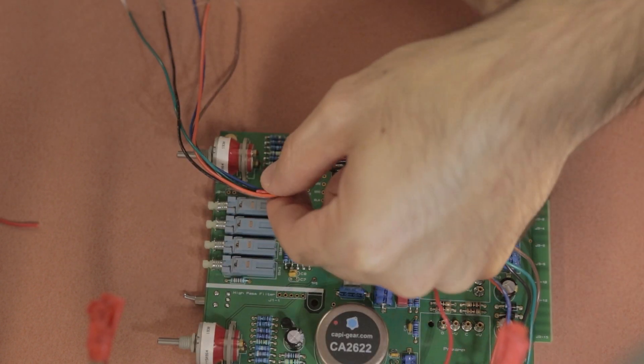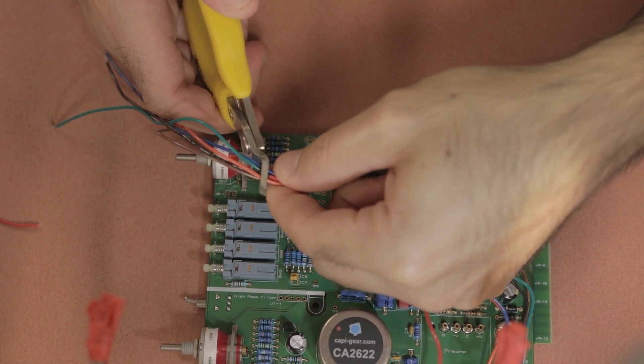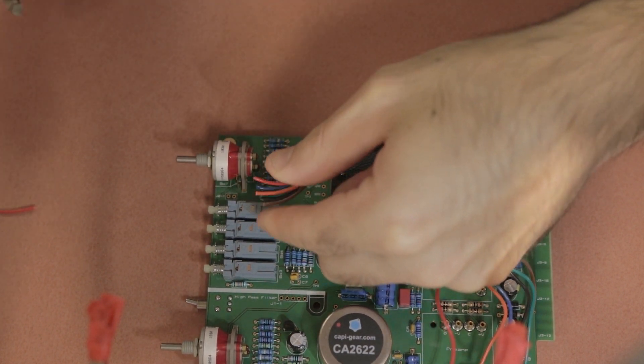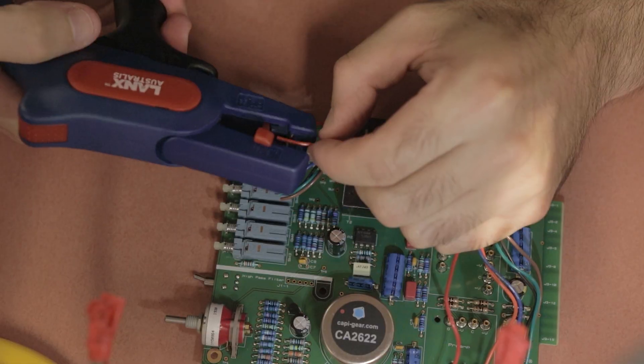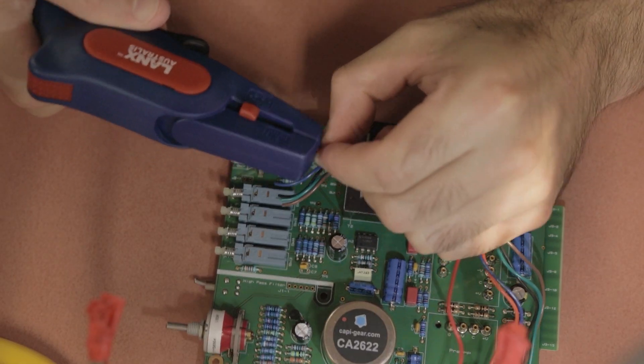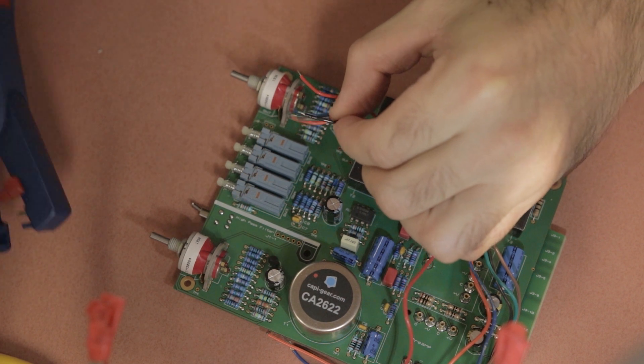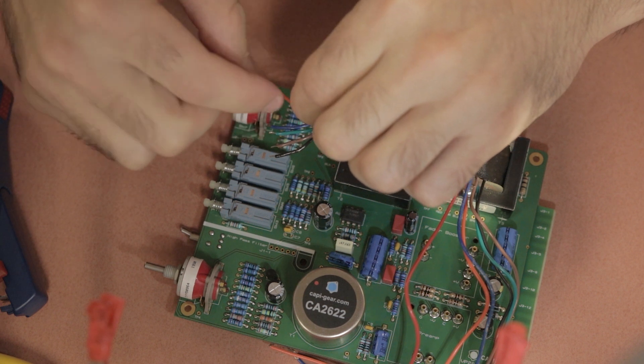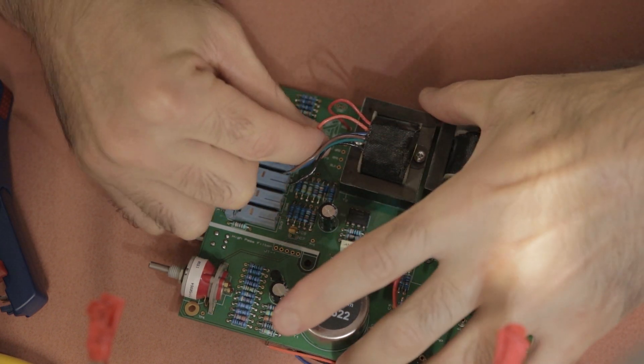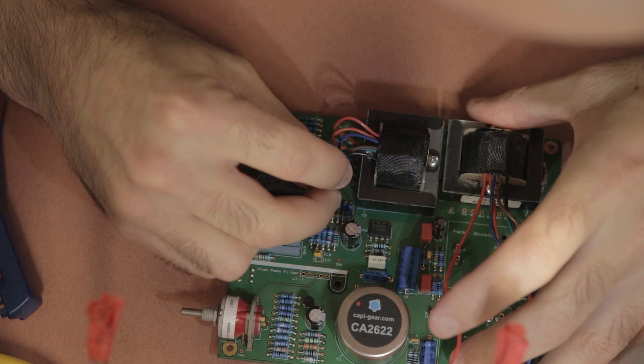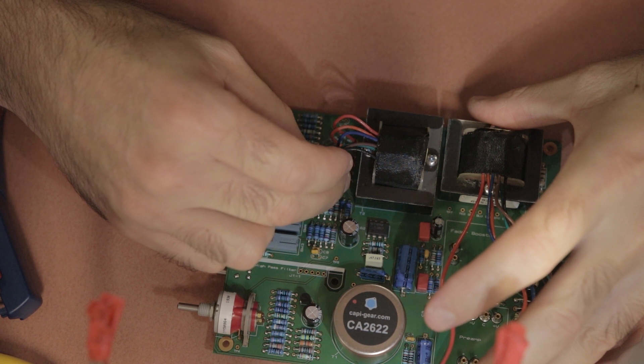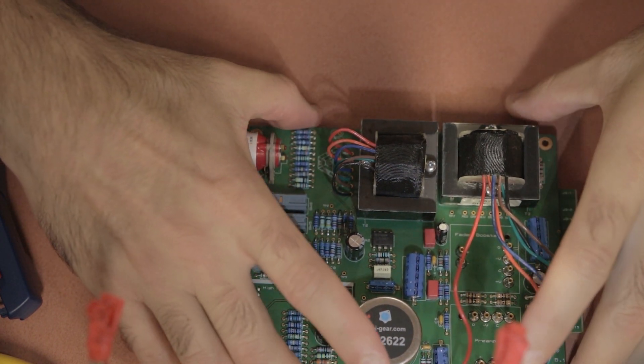Just measure those out by sort of holding the lead where it needs to go and then trim it. Then you need to strip the ends of each of all these leads so that they can be then inserted into the PCB and make sure you insert them in the right color order that's labeled on the PCB. It's pretty obvious what needs to go where as it's actually clearly abbreviated on the PCB there.